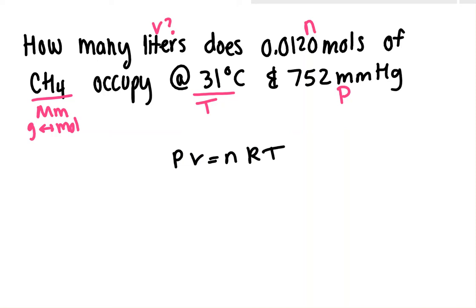And then before I plug it in, I want to make sure that I have everything in the right units. And let's just kind of check and make sure. So we're looking for volume. We have moles. We have r. R is that constant. We can get temperature and we can get pressure. So yes, we have everything we need to solve for our volume. We just need to make sure everything is in the correct units.